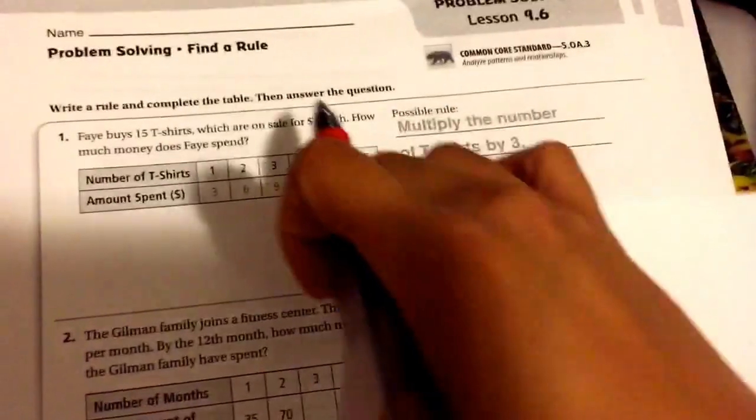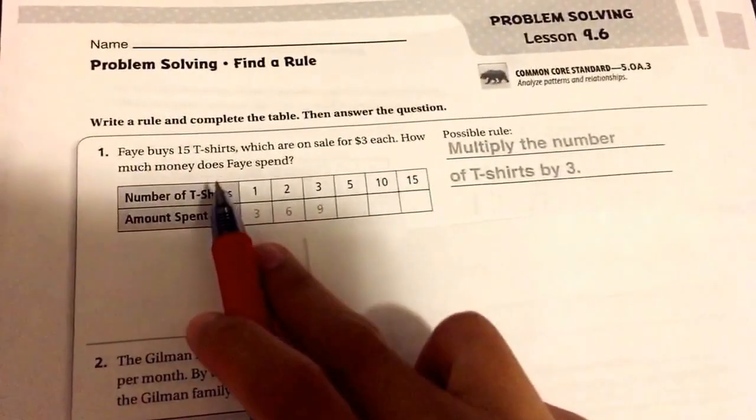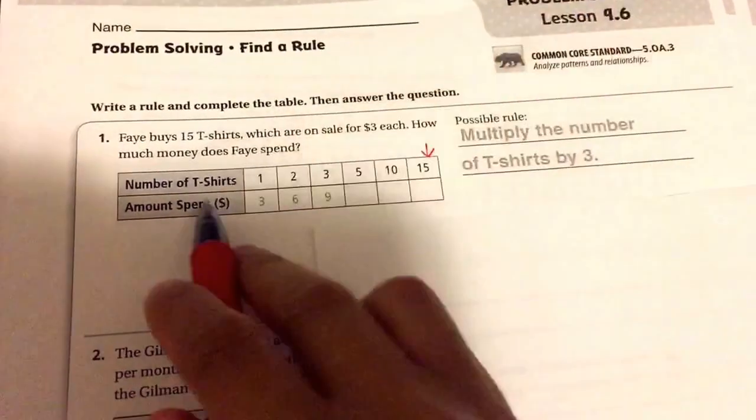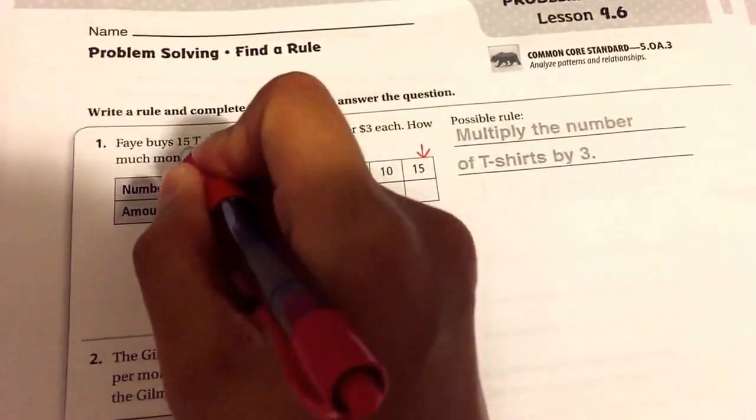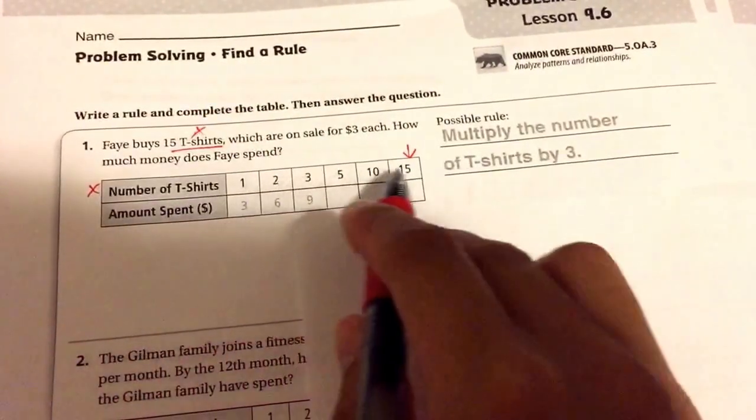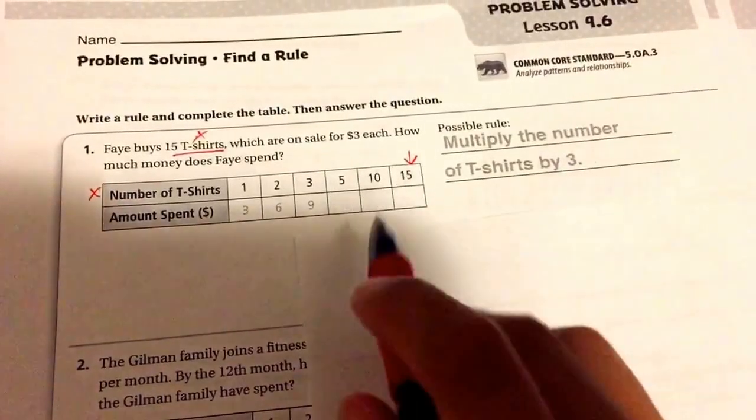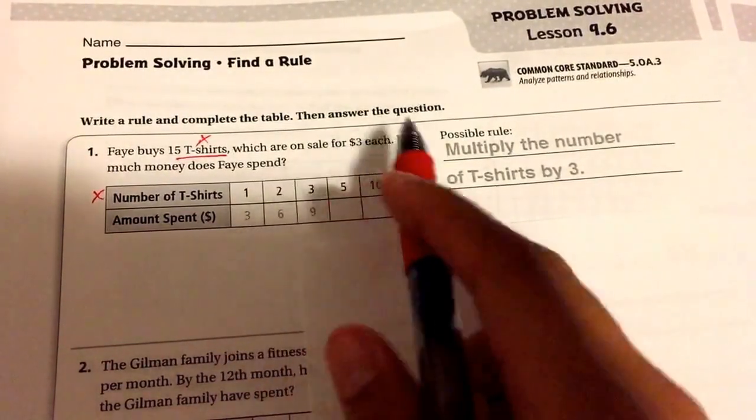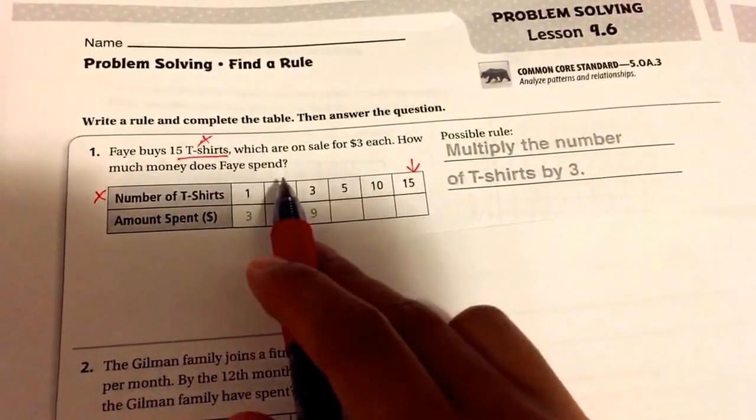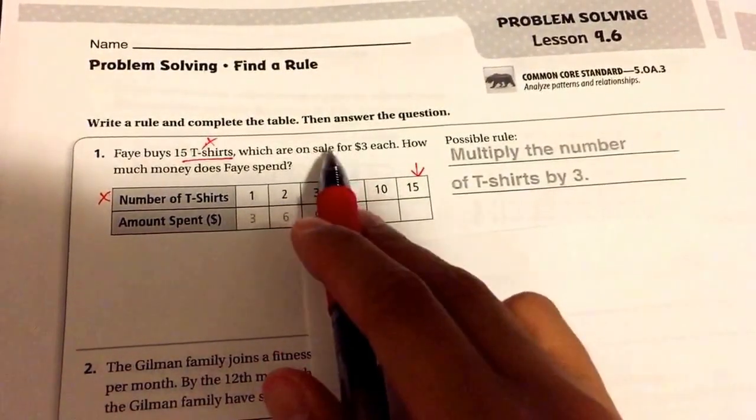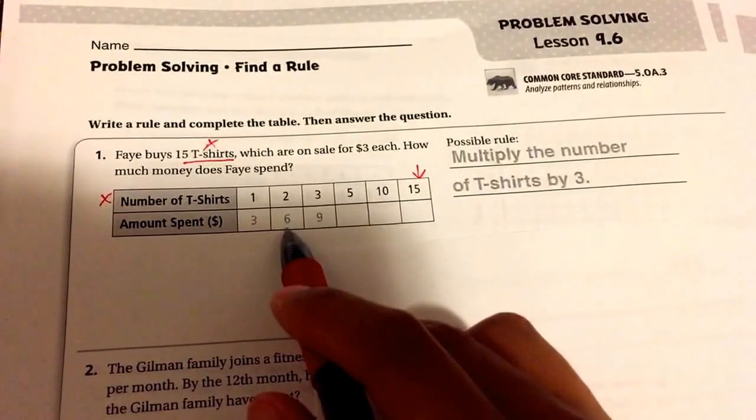That being said, let's try to solve it in the same way that we did the other. Faye buys 15 t-shirts, which is why this ends at 15. This is the number of t-shirts she buys—15 t-shirts, and that's our X. This is our X, so she buys 15 t-shirts, which is why it ends there, which are on sale for three dollars each. So if you buy one shirt it costs three dollars. How much money does Faye spend?